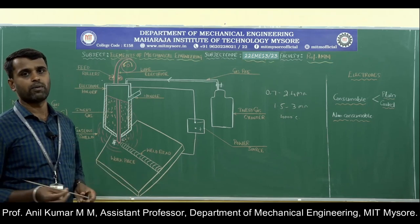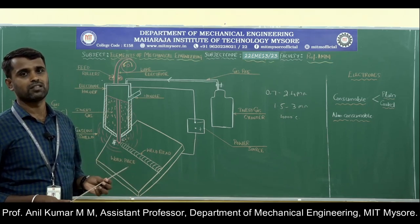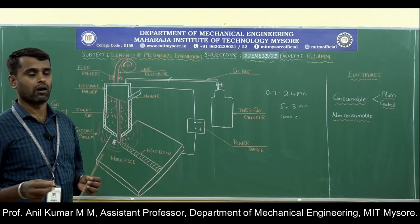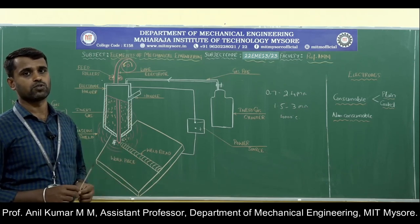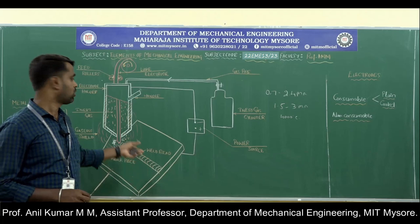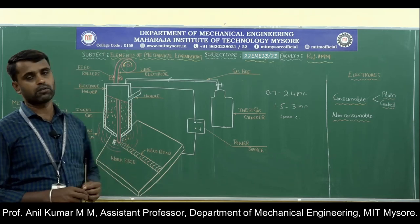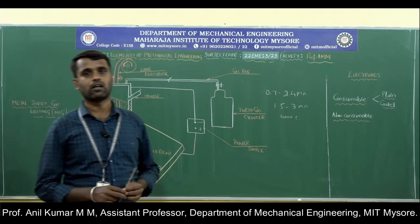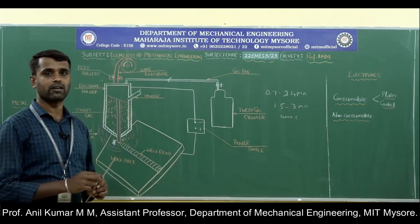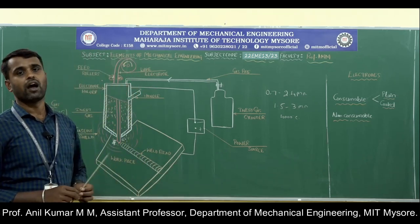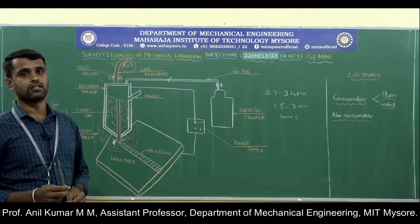Coming to the disadvantages: the equipment is very costly. Dross and porosity are the most prevalent quality problems in this process. These are the disadvantages of the MIG welding process. Coming to the applications: this type of welding is widely used in automobile industries, aircraft industries, sheet metal industries, and ship building industries.